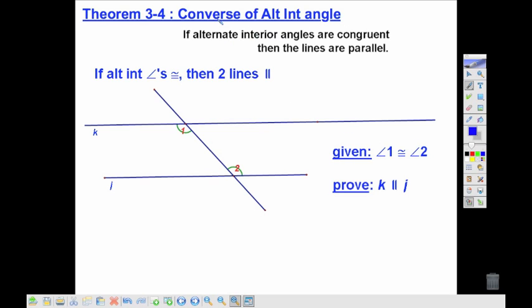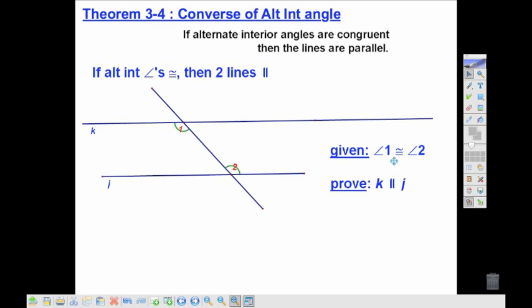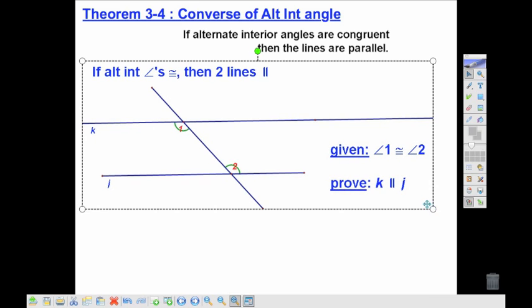The next theorem, the alternate interior angle theorem, is turning around what we did in the last section, saying if angles 1 and 2, alternate interior angles are congruent, then the two lines are parallel. If we're going to do a proof on this, it would be very similar to what we did in the last section.